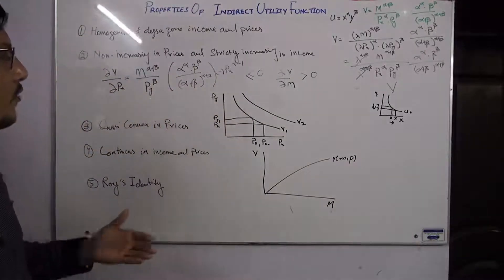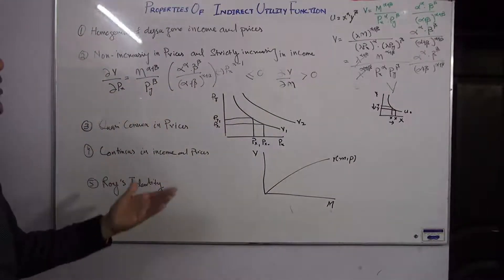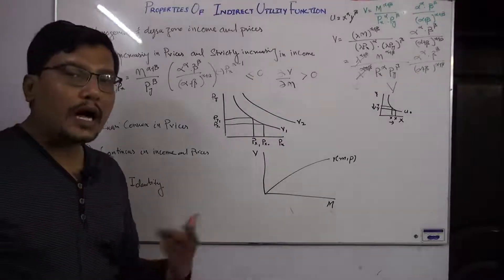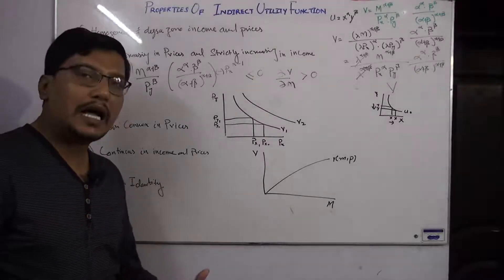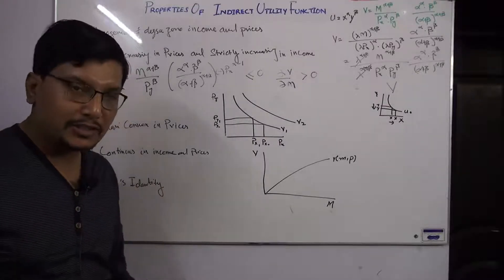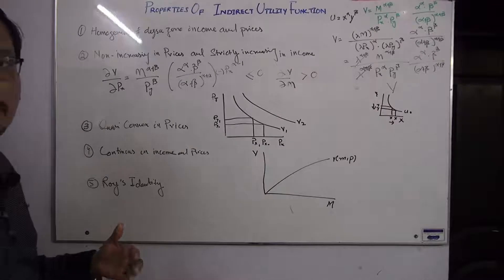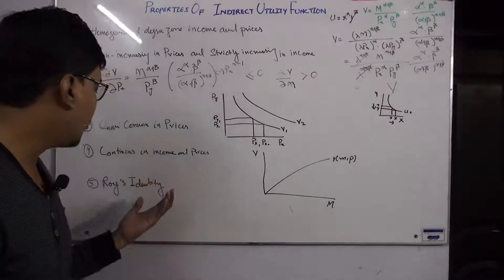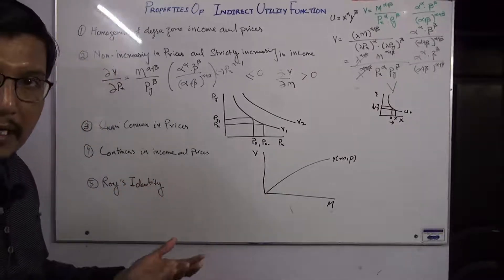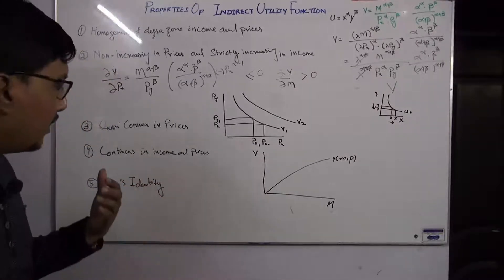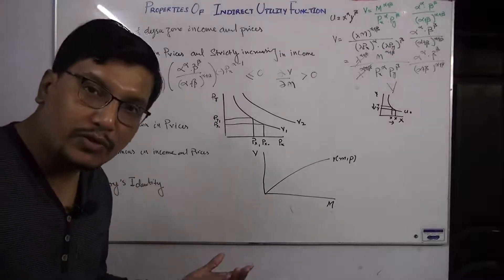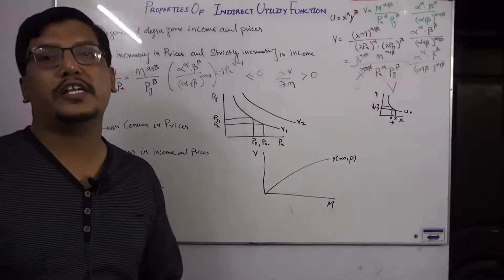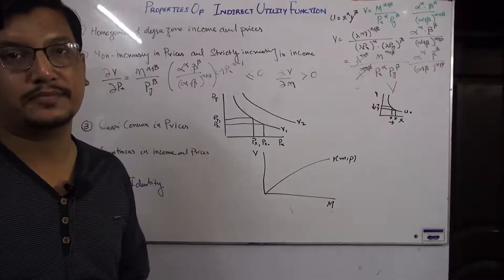The fifth property of the indirect utility function is Roy's Identity. Roy's Identity will be covered in a separate lecture where we will discuss in detail what Roy's Identity is and what its practical applications are. This is the fifth and final property of the indirect utility function.